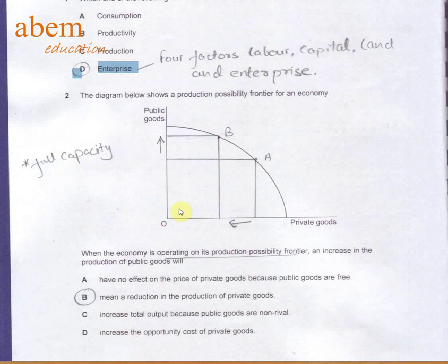In question number two, the economy is operating at full capacity, that is the PPF. Let's say we are operating on point A. The public goods manufactured are here and the private goods manufactured are here. So to increase the public goods to reach point B on the PPF, we will have to give up private goods. Hence the answer is point B or answer B.